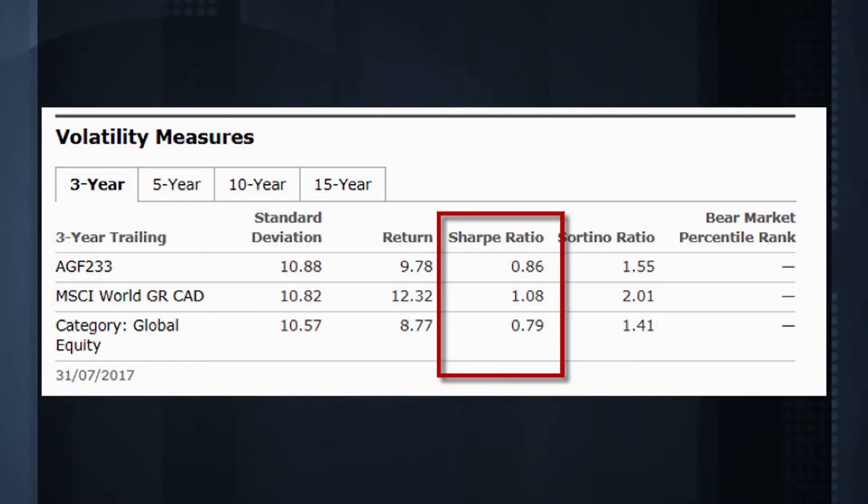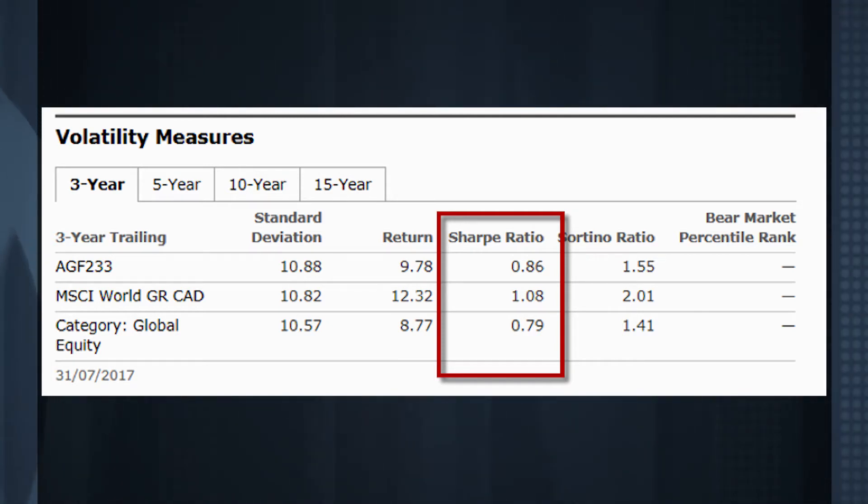Let's take a real-life example now: AGF Global Equity. In the Volatility Measures section of the Risk and Ratings tab of this fund's Morningstar report, we see that this fund's three-year Sharpe Ratio is 0.86 versus the average fund in its category, which is 0.79. This means that this fund has had a better risk-adjusted performance than the average Global Equity Fund. So the higher the Sharpe Ratio, the better the fund's historical risk-adjusted performance. For Morningstar, I'm Wendy Stein.